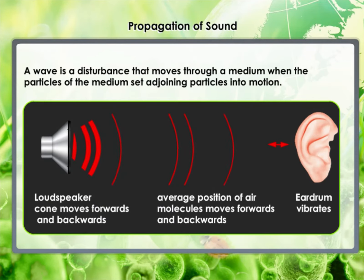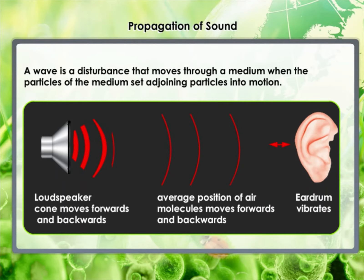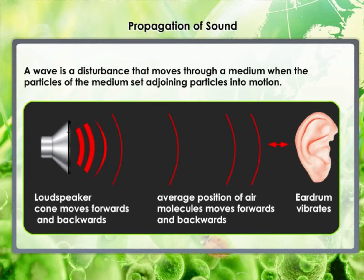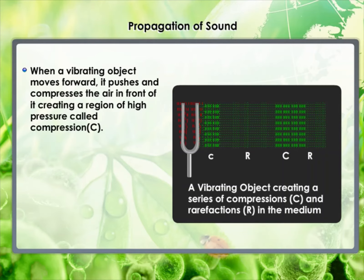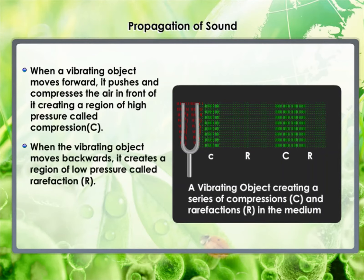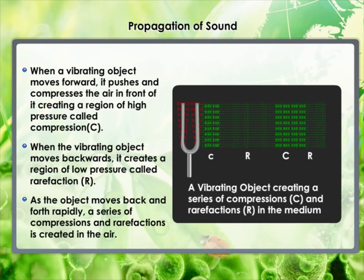After displacing the adjacent particle, the first particle comes back to its original position. This process continues in the medium till the sound reaches your ear. The disturbance created by the source travels through the medium — not the particles of the medium. A wave is a disturbance that moves through a medium, setting neighboring particles into motion. Sound can be visualized as a wave. Sound waves are characterized by the motion of particles in the medium and are called mechanical waves. When a vibrating object moves forward, it pushes and compresses the air in front of it, creating a region of high pressure called a compression (C).